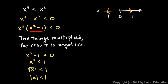But be careful: zero is not allowed. Looking back at the original equation, zero won't work because zero to the fourth is zero, and zero squared is zero, and zero is not less than zero. If it were less than or equal to, then zero would work — but it's not, so zero is excluded with an open circle. All numbers between negative one and zero are solutions, and all numbers between zero and positive one are solutions: negative one less than x less than zero, or zero less than x less than one.